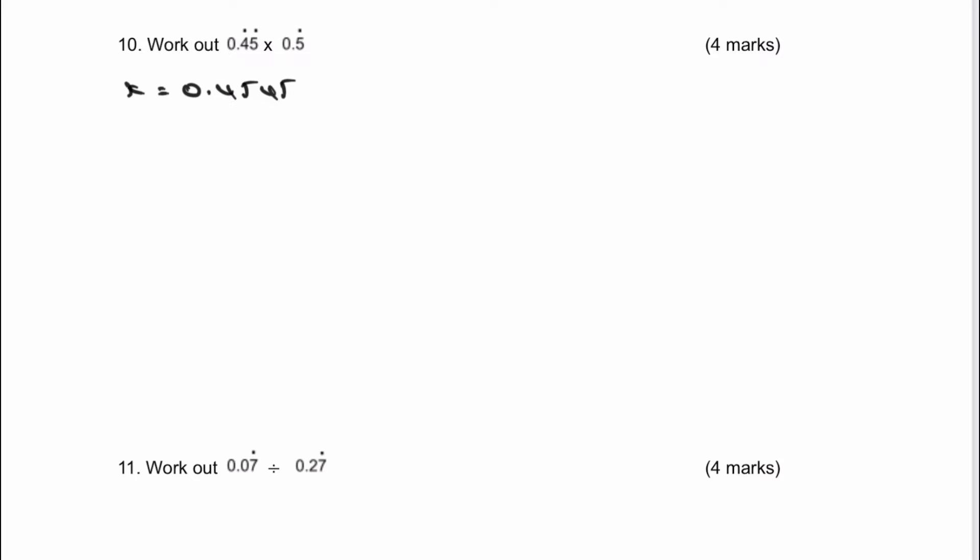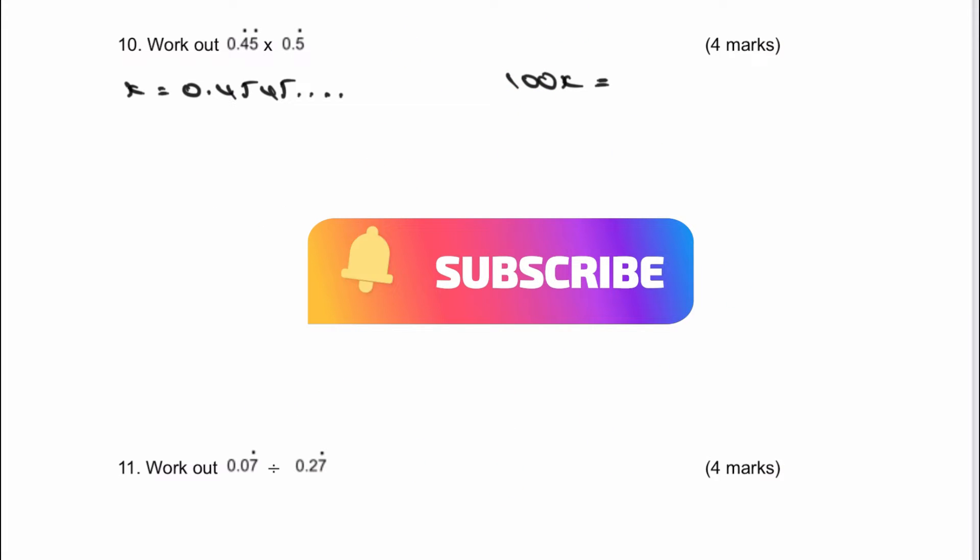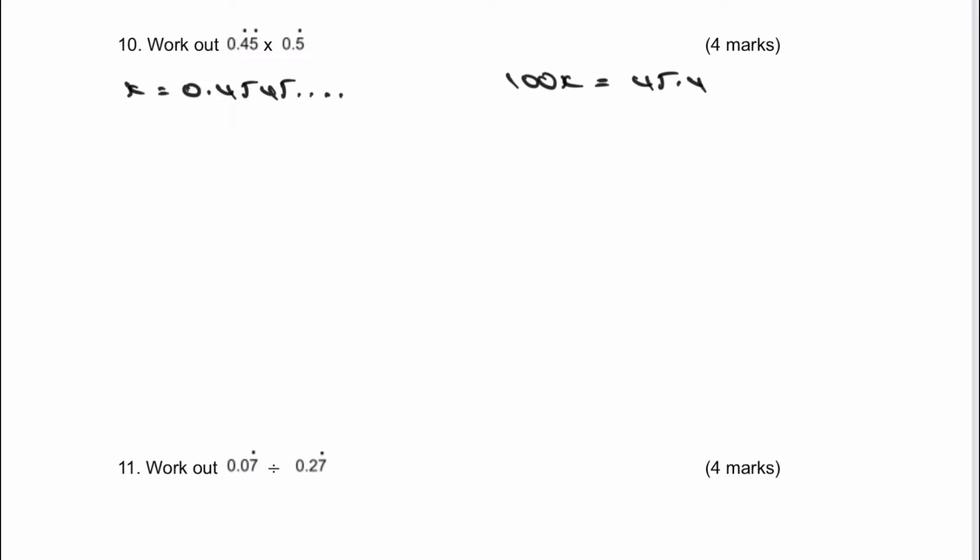So 4, 5, 4, 5. I can then, as I've done before, multiply that by two decimal or move the decimal point by two places, multiply by 100 gives me 45.4545 and so on. And take away my original value of x, which is 0.4545. And like before, the whole principle is to get rid of the recurring bit of it. And what I end up with by subtracting is 99x equals 45.